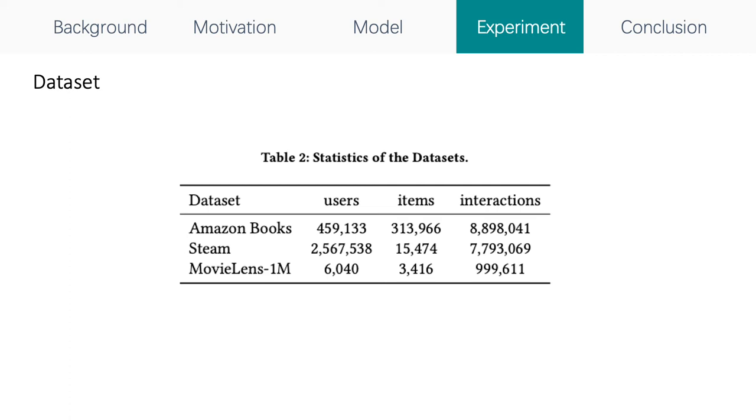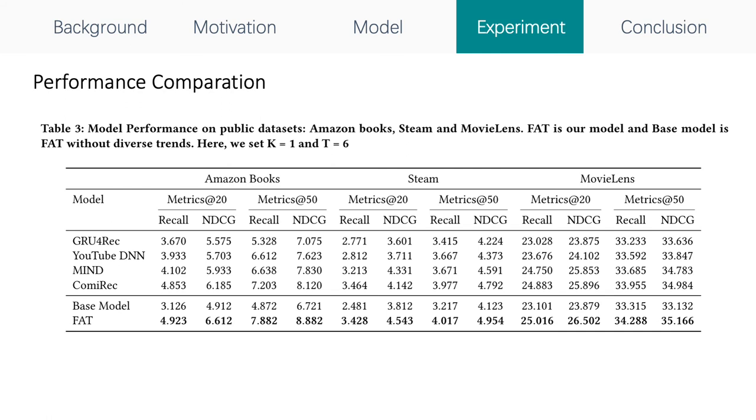To evaluate, we randomly select an interactive item by the user as a target item for each user, while the items interacted before the target item are collected as the user behaviors. The model performance for the sequential recommendation is shown in this table. We run experiments to dissect the effectiveness of our recommendation model. We compare the performance of FAT with the baseline model of FAT and four state-of-the-art models. All these models are running on three datasets introduced above, such as Amazon Books, Steam, and MovieLens. According to the results shown in the table, our model FAT obtains better performance on all evaluation metrics of all the tasks than other models.